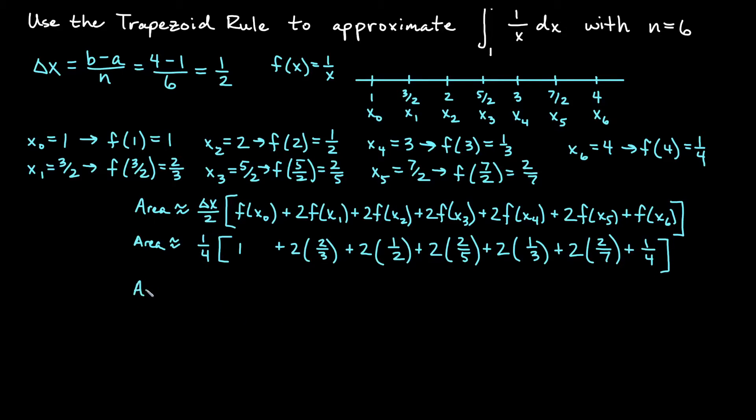So we'll go ahead and let's at least multiply everything by 2. So we'll say 1 fourth and leave that out front. So I have 1 plus, this would be 4 thirds, plus 2 times a half would be 1, plus 2 times 2 fifths would be 4 fifths, plus 2 times a third would be 2 thirds, plus 2 times 2 over 7, which would be 4 over 7, plus 1 fourth.